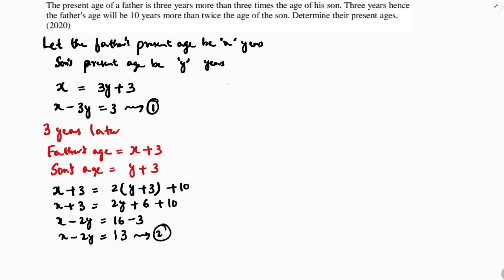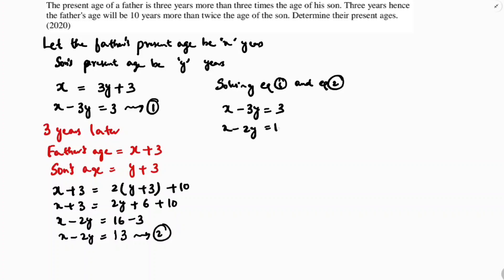Solving equations 1 and 2: the first equation is x minus 3y equals 3, and the second equation is x minus 2y equals 13.